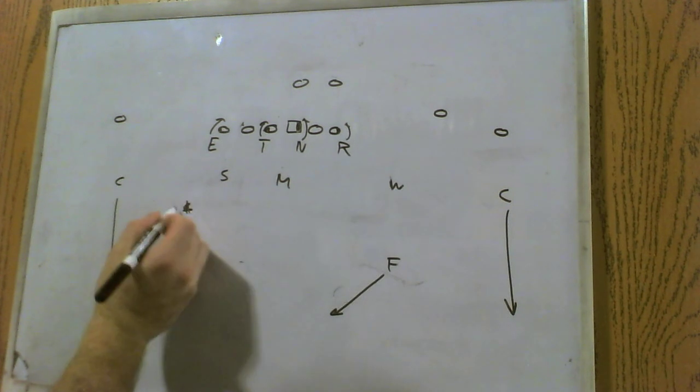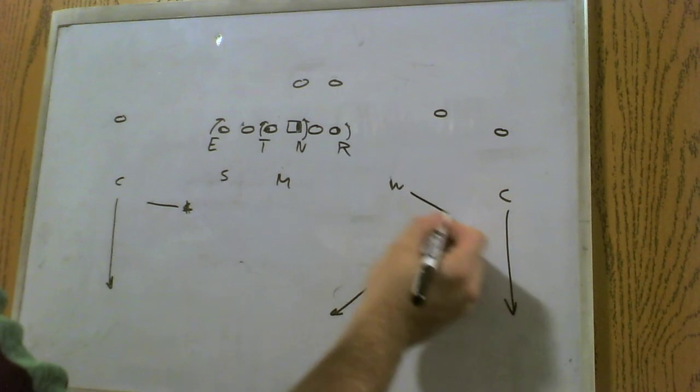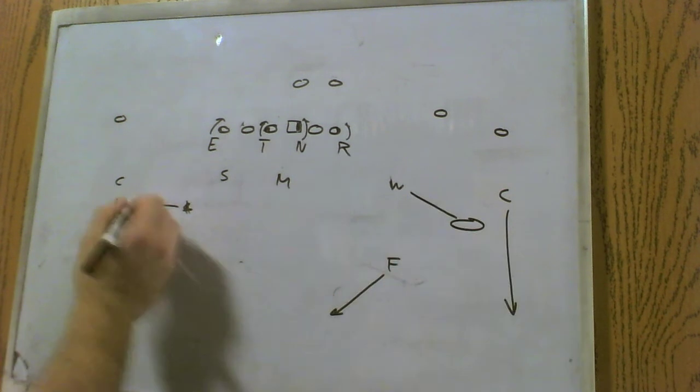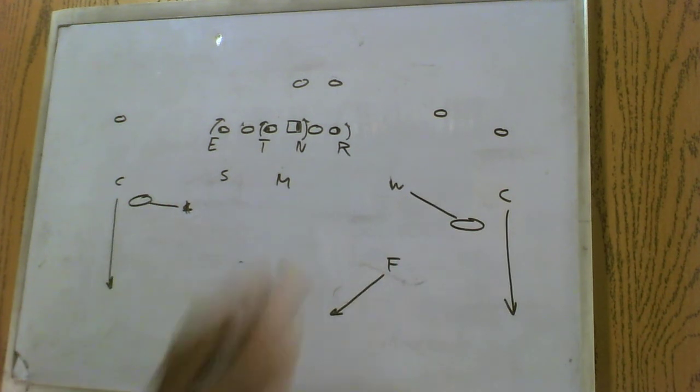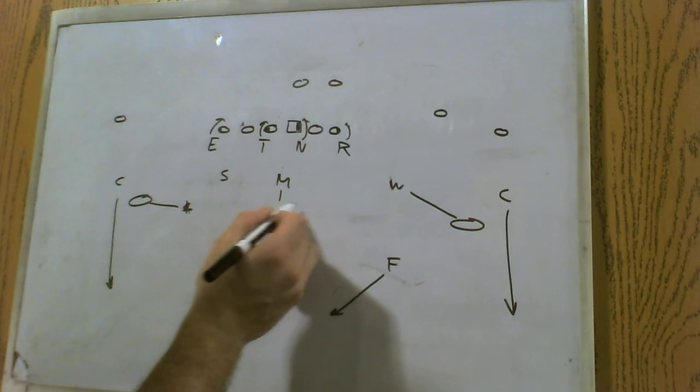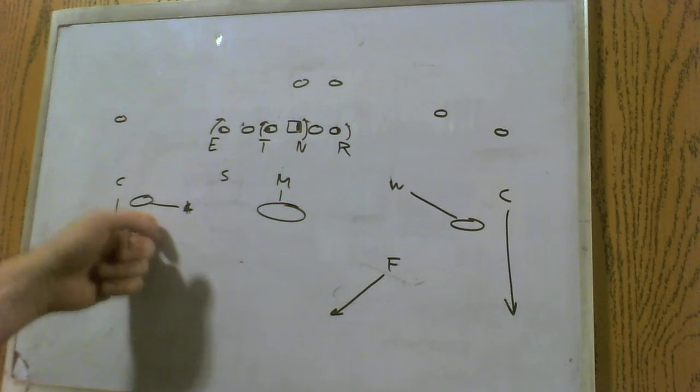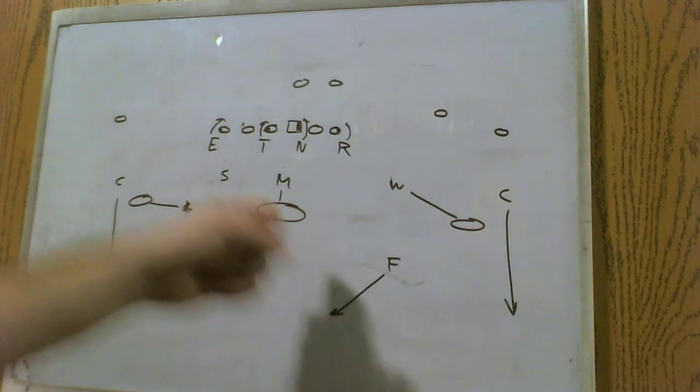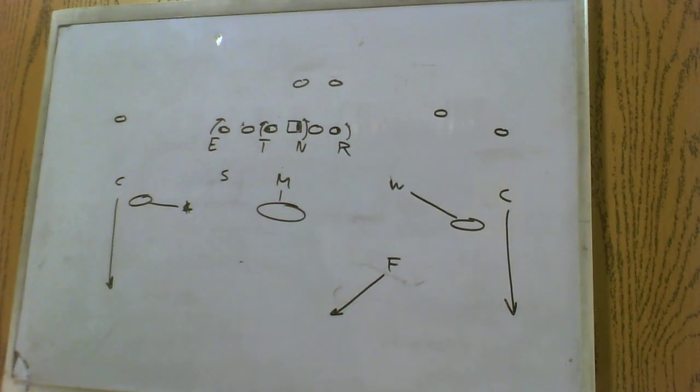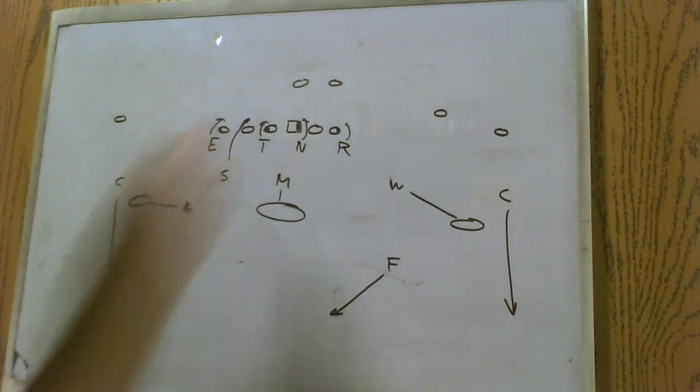He's actually going to come forward a little bit on the outside of the numbers. And the Mike linebacker will drop to the middle of the field. So, if there's three underneath defenders, numbers, numbers, middle of the field. And then, again, whoever's left, blitzes.